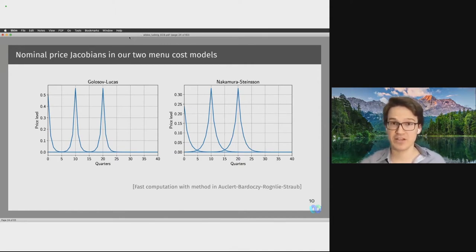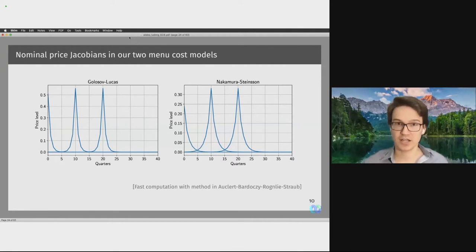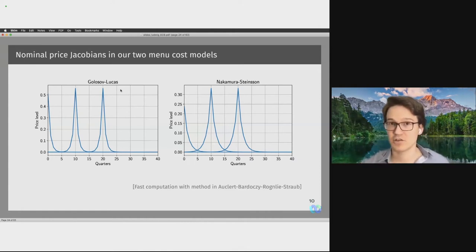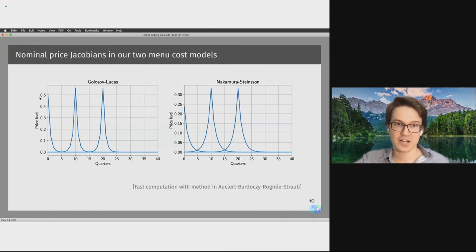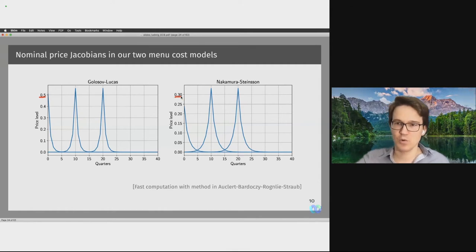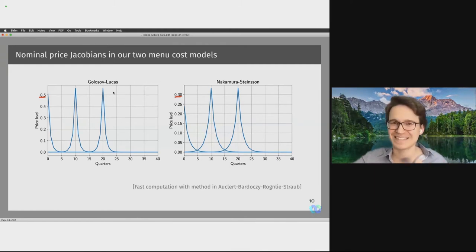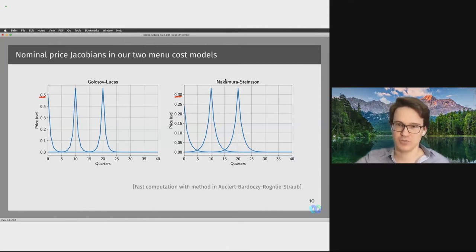When we use these two calibrated menu cost models to compute the nominal price Jacobians, the columns kind of look like the tent-shaped figures we already saw for the Calvo model, but they differ. The Golosov-Lucas model has higher values and spikes more — it is more squished together relative to the Nakamura-Steinsson model, which is broader and wider. This already suggests that the Golosov-Lucas model has less monetary non-neutrality, closer to the flexible price benchmark compared to Nakamura-Steinsson.